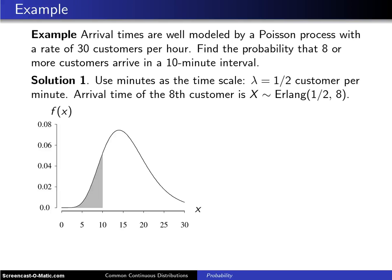Here's a question that illustrates the use of the gamma distribution. It'll be solved in two different ways. The first solution is on this slide and the second solution is on the next slide. Arrival times are well modeled by a Poisson process.